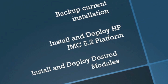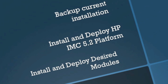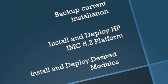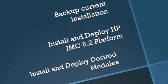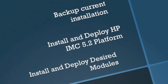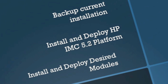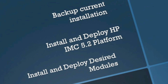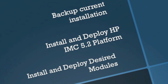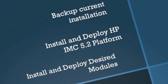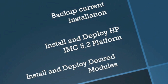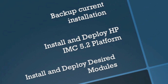Welcome back. Today we're going to look at upgrading IMC 5.1 SP1 to the brand new IMC 5.2 platform and modules. The first thing we're going to do is back up the current installation — always a best practice to back up before you make changes. Then we're going to install and deploy the HP IMC 5.2 platform and the desired modules. Let's take a look.